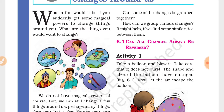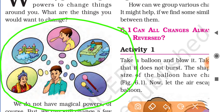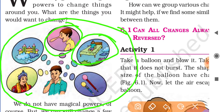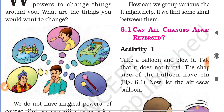The chapter's first introduction asks: if you get some magical powers, what changes would you make around yourself? A boy's figure is shown here. He is thinking about changing the shape of his friend's nose, making his bed fly in the sky, wearing a dress of a king, and many other examples. You can also imagine these things.